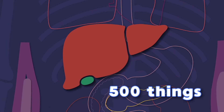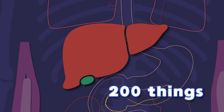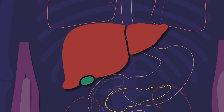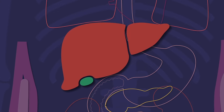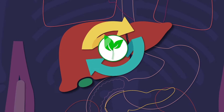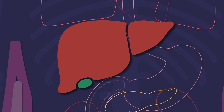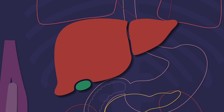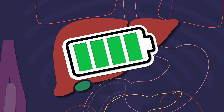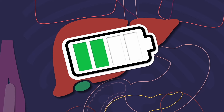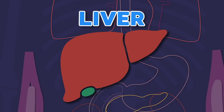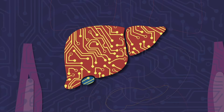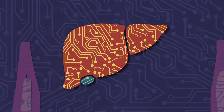Your liver is the only organ in your whole body that naturally regenerates to the size it's supposed to be. It also makes glucose from all the carbs that you eat. The glucose stored in your liver acts like a battery — it's the thing that fuels all of the functions in your whole body.